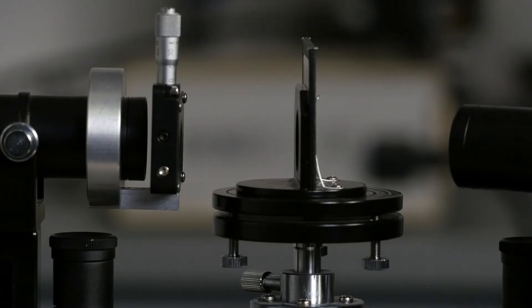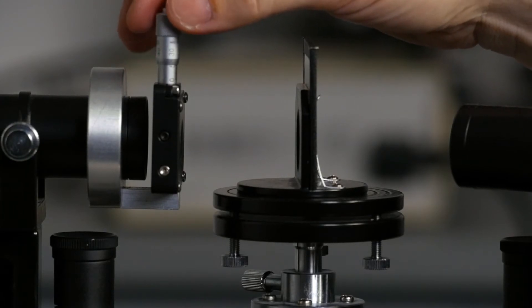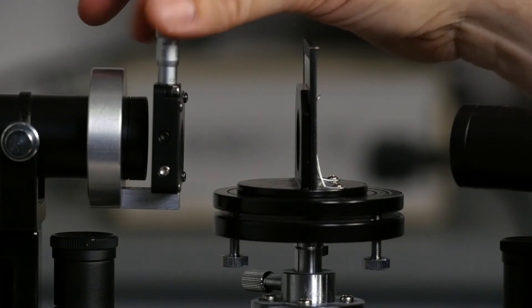Determine with the micrometer drive of the resolution slit the cross-section for which the two yellow lines can just no longer be separated. Again for the first and second order.